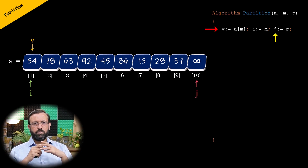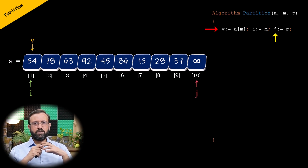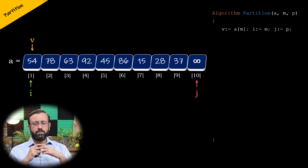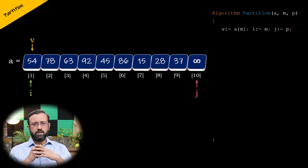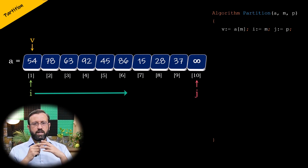We will also have a variable J, which is used to move the index from right to left, and is initialized to P, that is J is assigned the index of the last element P. Now the logic is to find the position of the pivot element V, such that the elements before element V will be smaller and the elements after element V will be larger. To do this, we have to examine if any element is smaller than the pivot element, and if so, place that element on the left side of the pivot element. So we have to move the index i from left to right to search for elements greater than the pivot element.